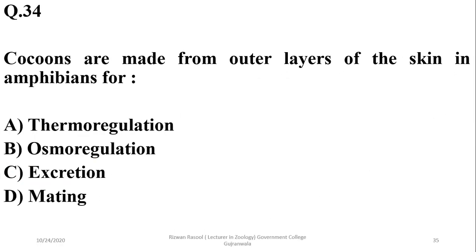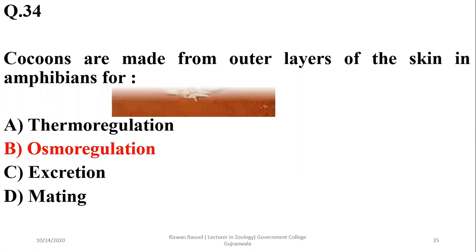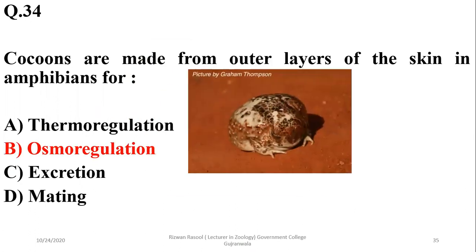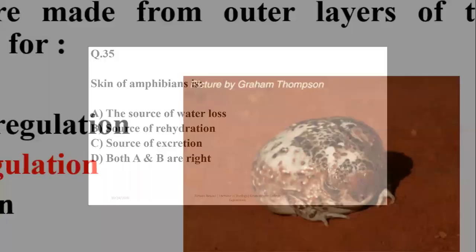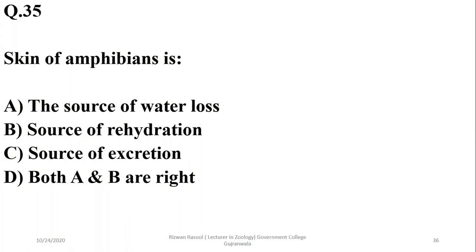Cocoons are made from outer layers of the skin in amphibians and are a strategy for osmoregulation, especially in amphibians living in dry areas. So the right option is B.